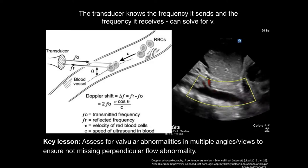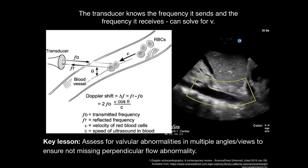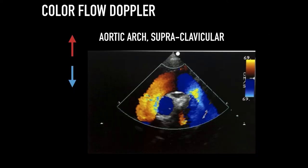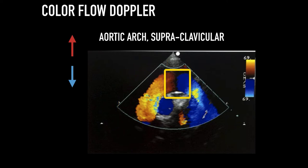The key lesson is to assess for valve abnormalities in multiple angles and views to ensure you are not missing perpendicular flow abnormalities. In this image, the flow is going towards the top of the aortic arch. The color intensity drops and becomes darker until it becomes black. There is definite blood flow in those regions, but the Doppler shift cannot be picked up because it is perpendicular to the ultrasound beam.